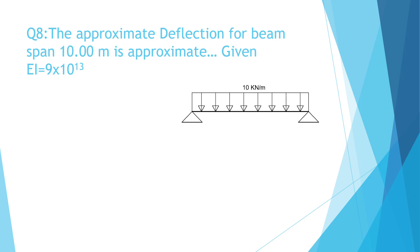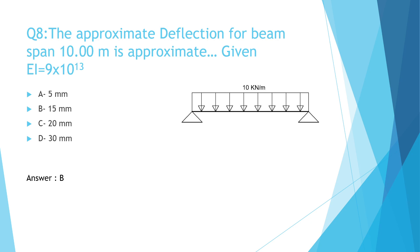Question Number 8: The approximate deflection for a beam span of 10 meters is approximately: A. 5mm, B. 15mm, C. 20mm, D. 30mm. The correct answer is B. 15mm.